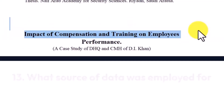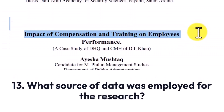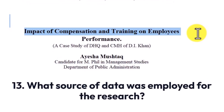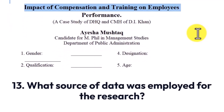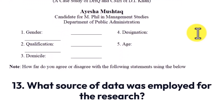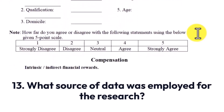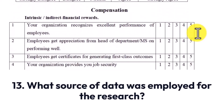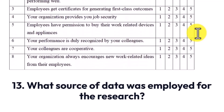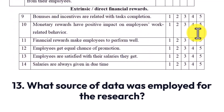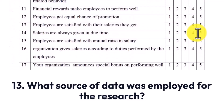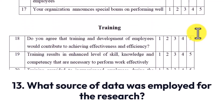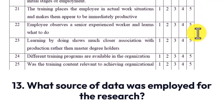Question number 13: What source of data was employed for the research? Here you simply state the data collection methods that were used in the study. You should state if primary sources such as questionnaires, interviews, or observation, or secondary sources such as textbooks, journals, and articles were used. If you combined primary and secondary sources, briefly talk about it.